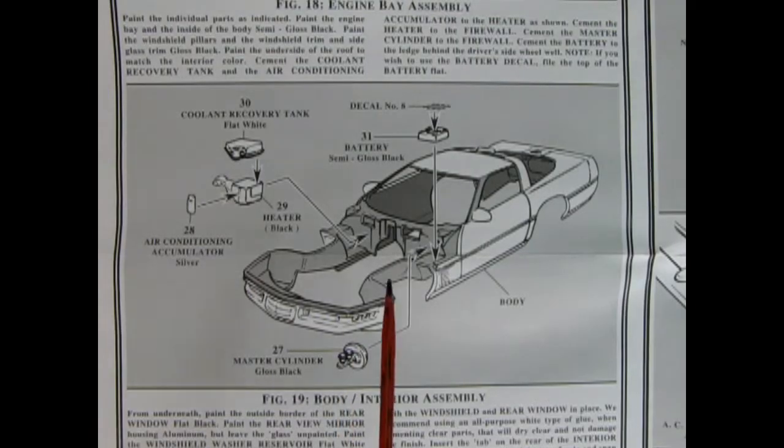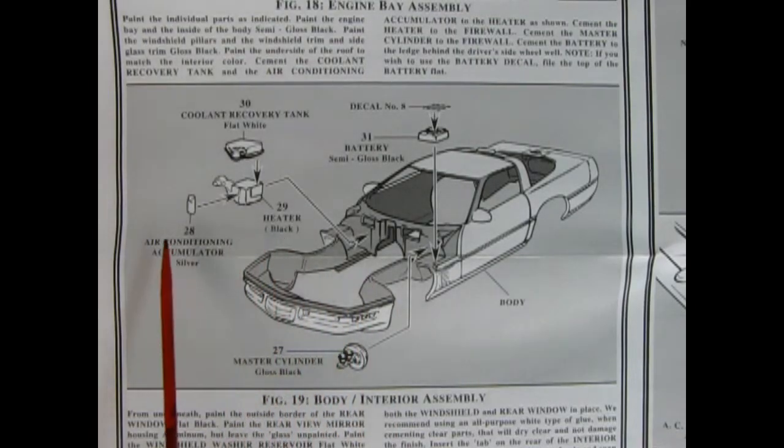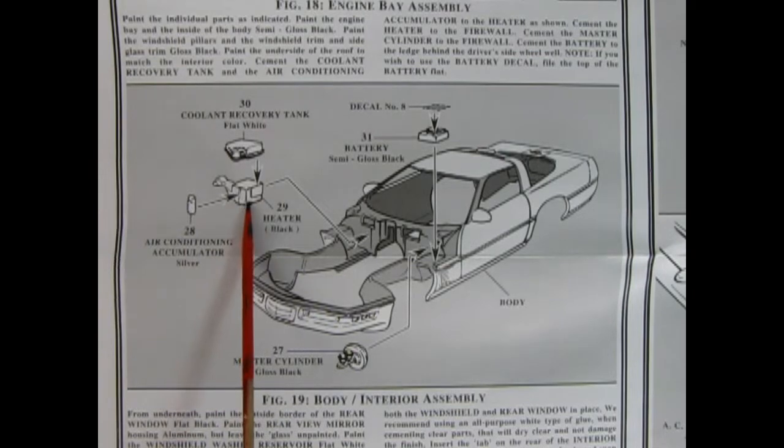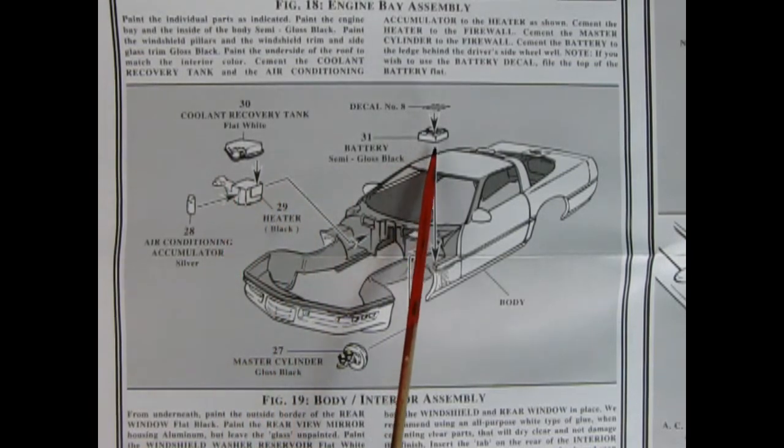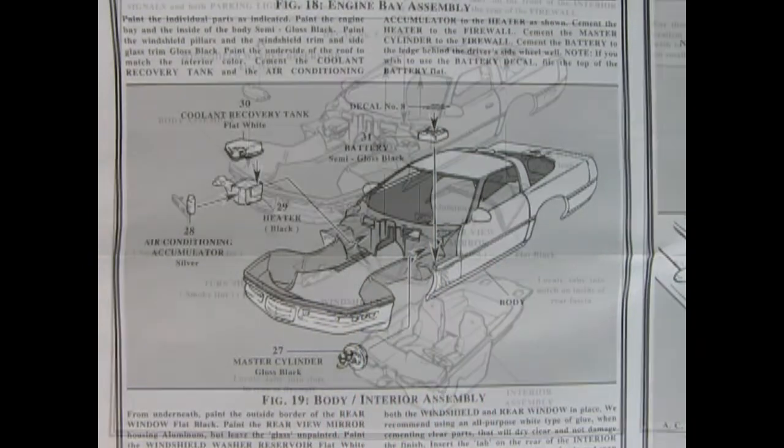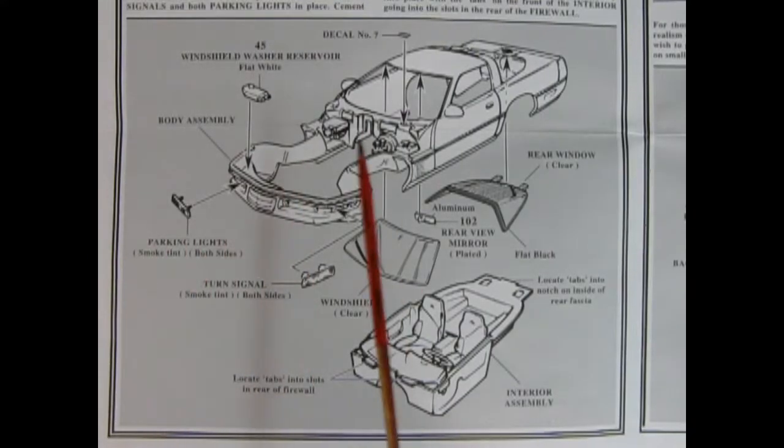Now here we have the engine bay assembly, and we can see our air conditioning unit and the heater here all going together. And there's the recovery tank up top, and then we've got our battery here and a decal going in place as well as a master cylinder.